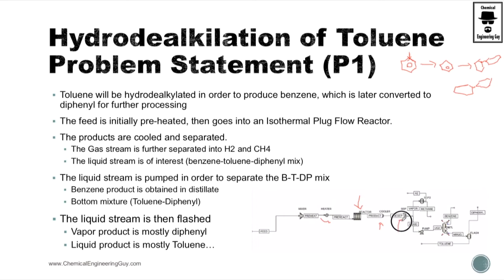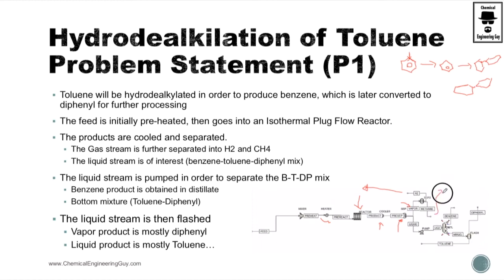We're going to be modeling a SEP 1 or 2. What we want here is hydrogen gas and methane gas to go into the vapor phase. In the second separator, hydrogen gas and methane are separated — hydrogen will go to a hydrogen stream, and methane can be used as natural gas or go to the flare system. The liquid stream contains the benzene, toluene, and diphenyl mix.